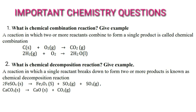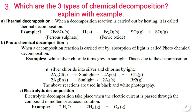Next question: what is a chemical decomposition reaction? Give an example. A reaction in which a single reactant breaks down into two or more products is called a chemical decomposition reaction. It is almost the opposite of the combination reaction. There are three types of chemical decomposition reaction that may be asked in the exam.